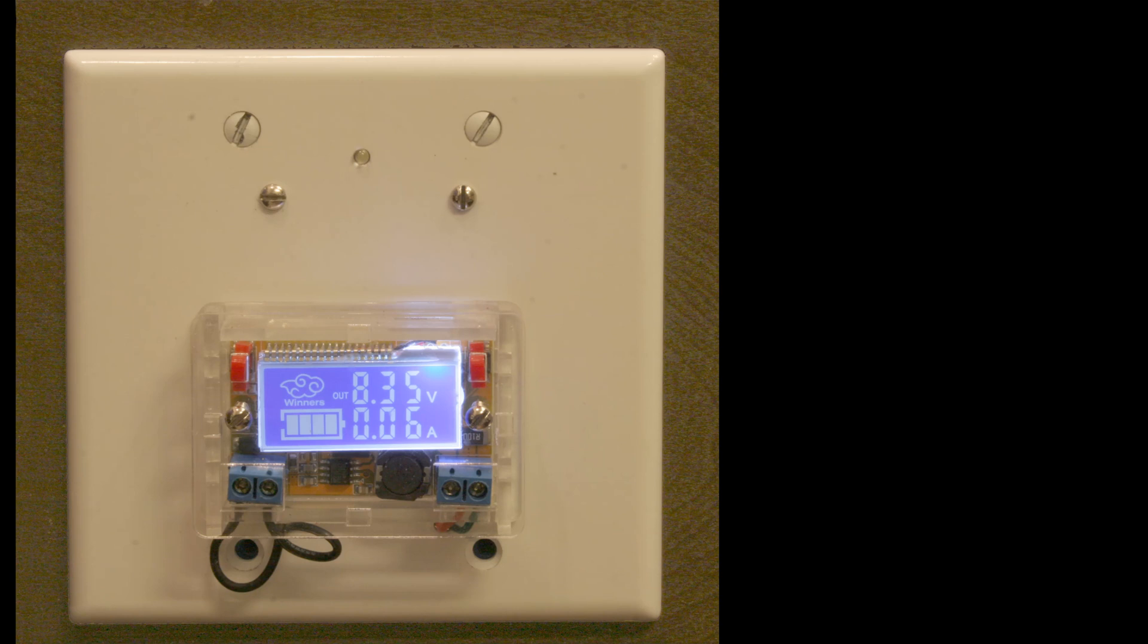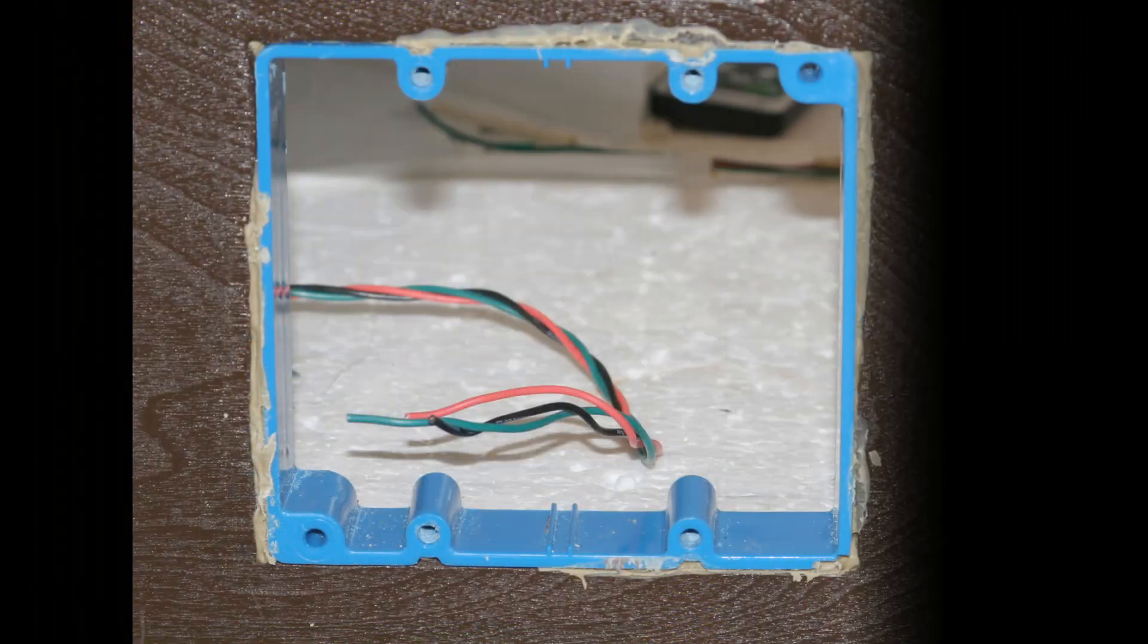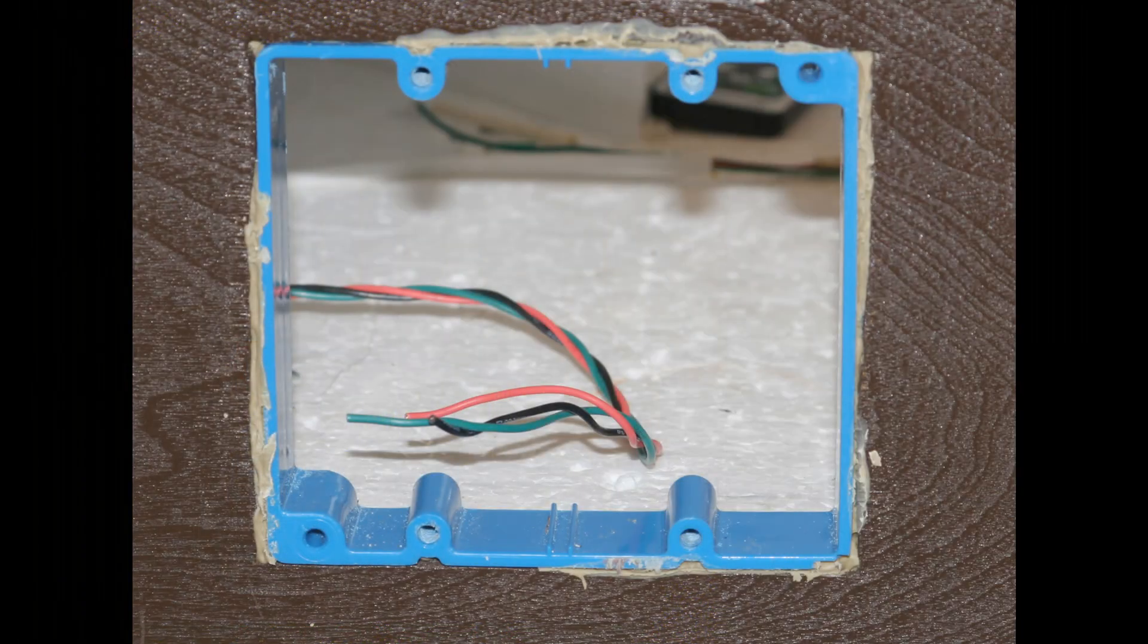I mounted the variable power supply on a wall plate and this in turn was mounted into a cut down plastic electrical box which was then glued into the fascia board.